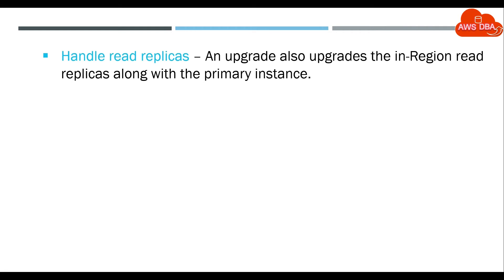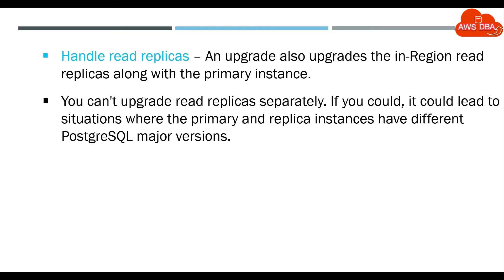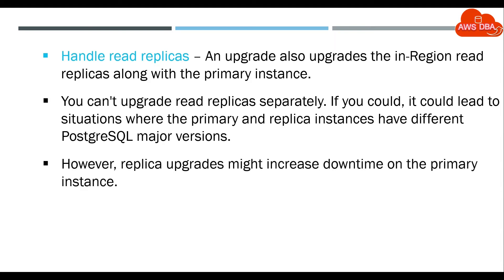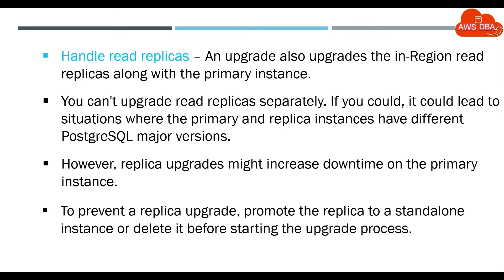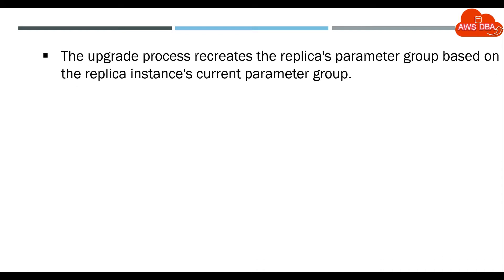Handle read replicas — an upgrade also upgrades the in-region read replicas along with the primary instance. If not handled, it could lead to situations where the primary and replica instances have different PostgreSQL major versions. However, replica upgrades might increase downtime on the primary instance. To prevent a replica upgrade, promote the replica to a standalone instance or delete it before starting the upgrade process. The upgrade process recreates the replica's parameter group based on the replica instance's current parameter group.